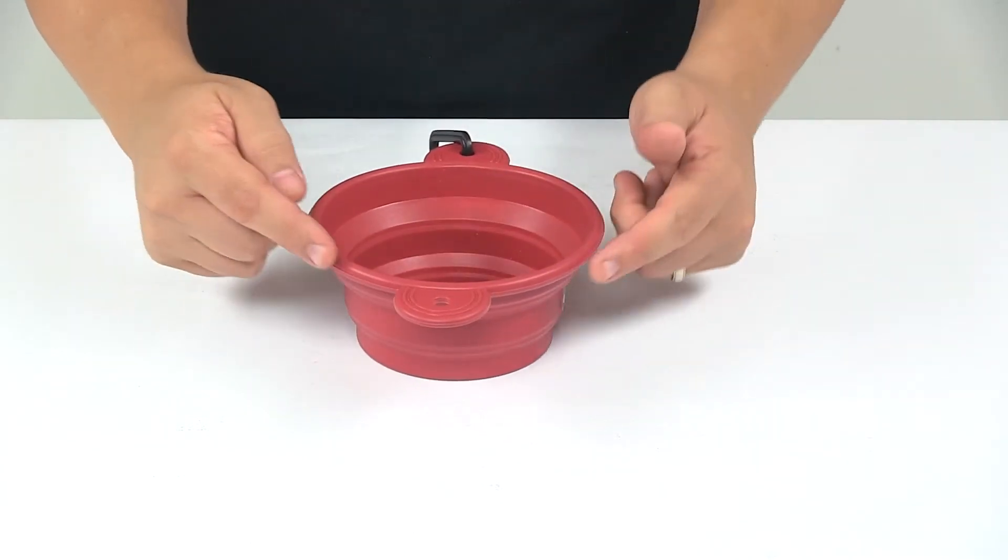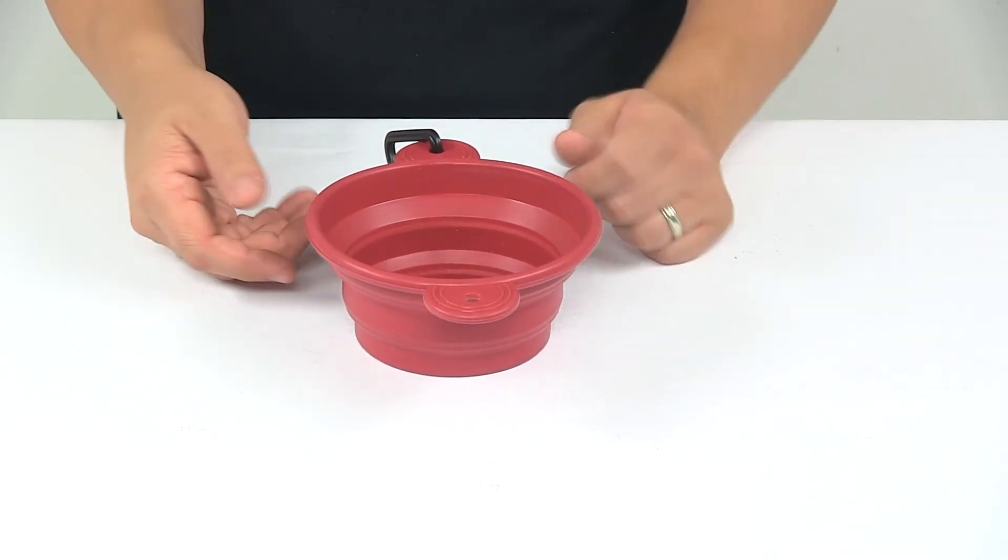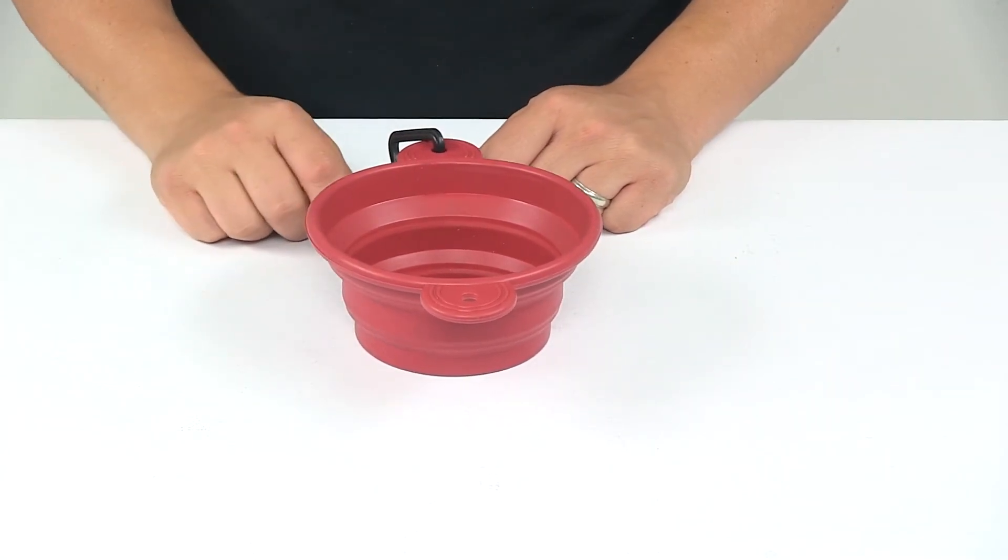The overall diameter of the bowl, when in this orientation, is six inches, and the overall height is two and three-quarter inches.